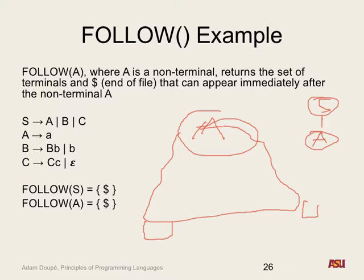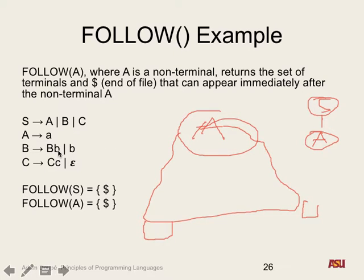What about for B? We look at rules 1 and 3 — any place B appears on the right-hand side. From rule 1, B is the rightmost symbol so we get end of file. B also references itself recursively — big B followed by little b — so from rule 3, what follows big B is little b. So the follow set of B is end of file and little b.